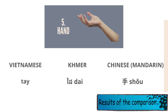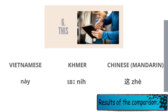Five: hand. In Vietnamese, 'tay'; in Khmer, 'đáy' — almost identical. In Chinese Mandarin, 'shǒu.' Six: this. In Vietnamese, 'này'; in Khmer, 'nai' — very close. In Chinese, 'zhè.'